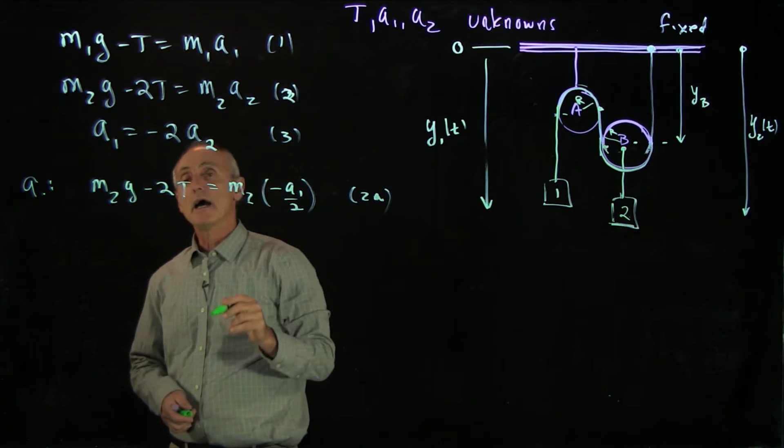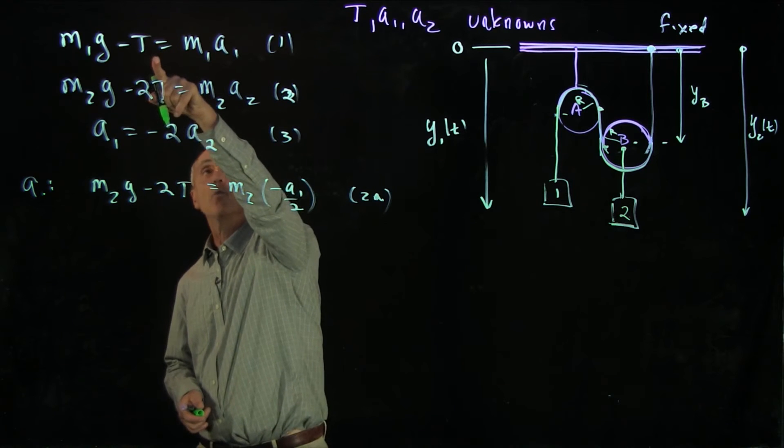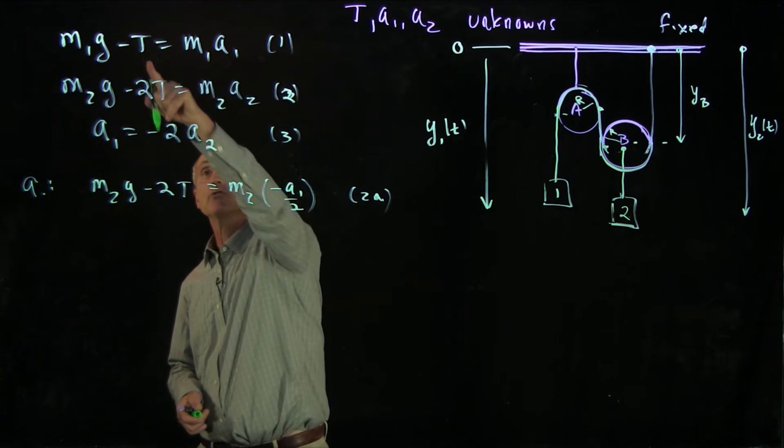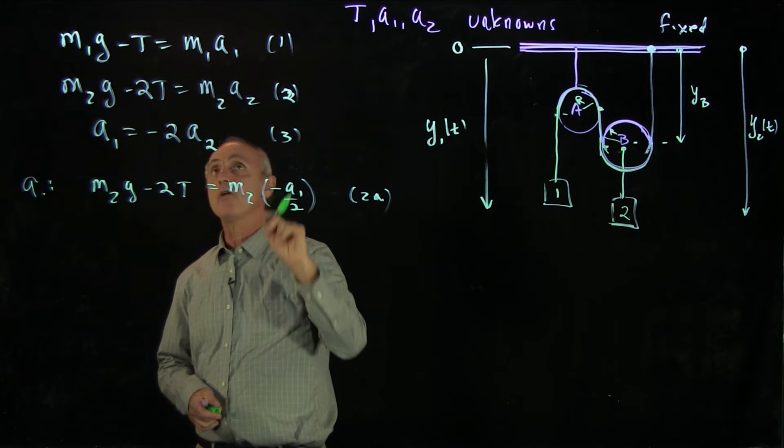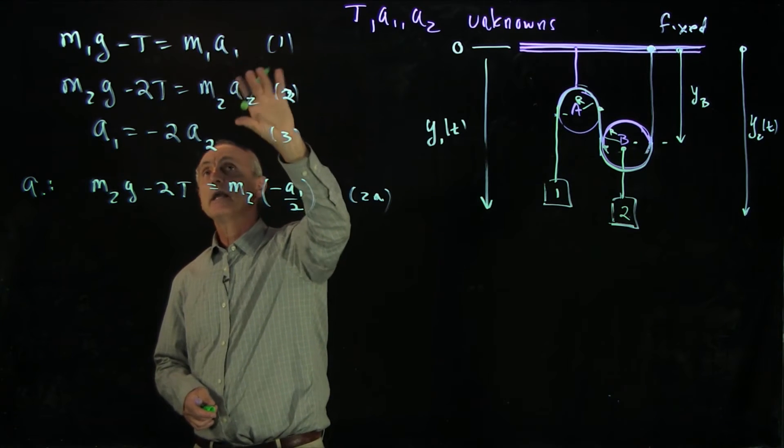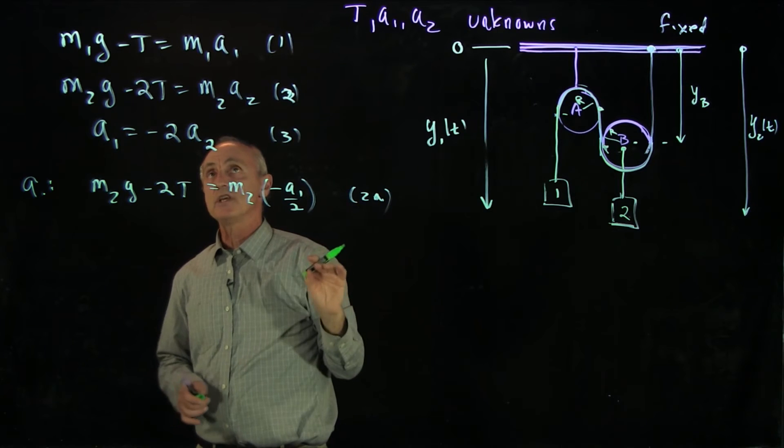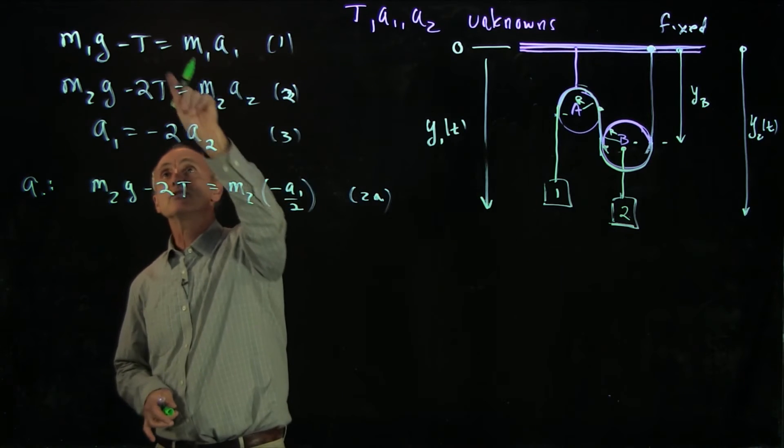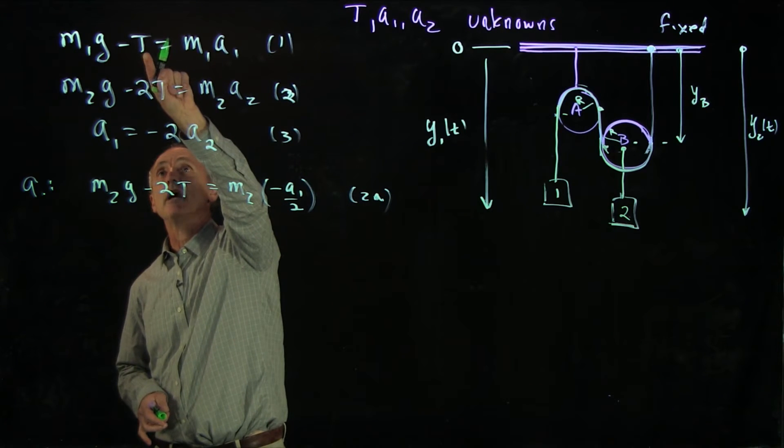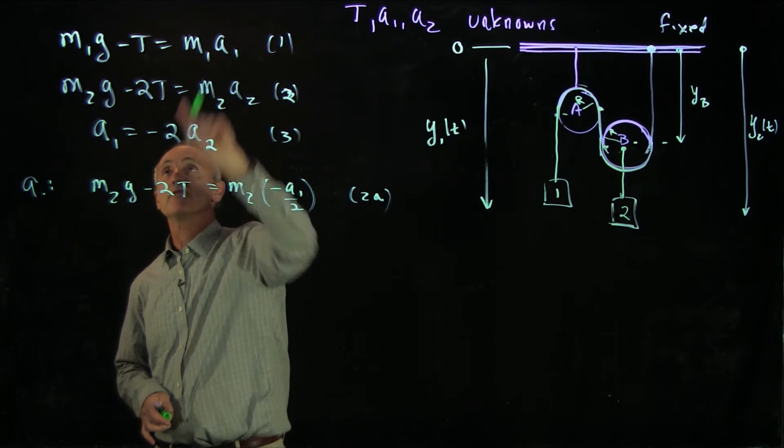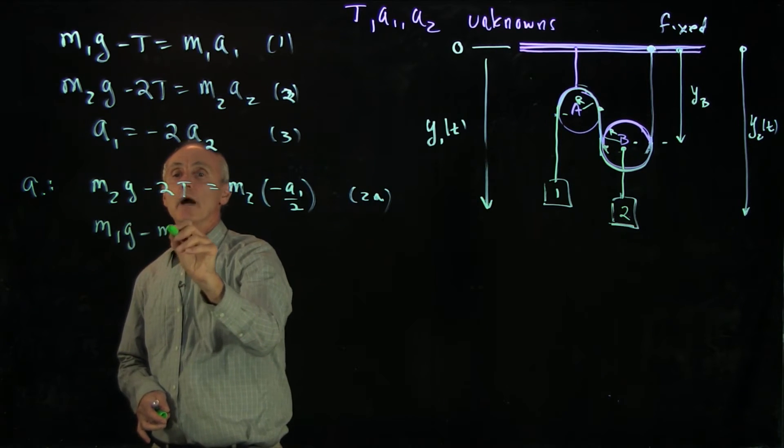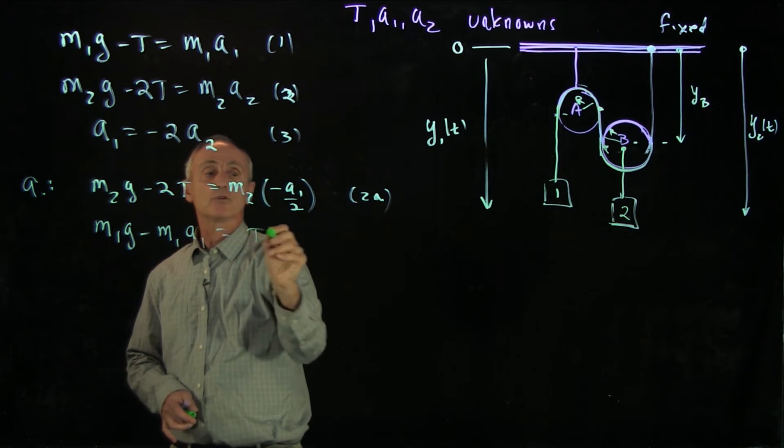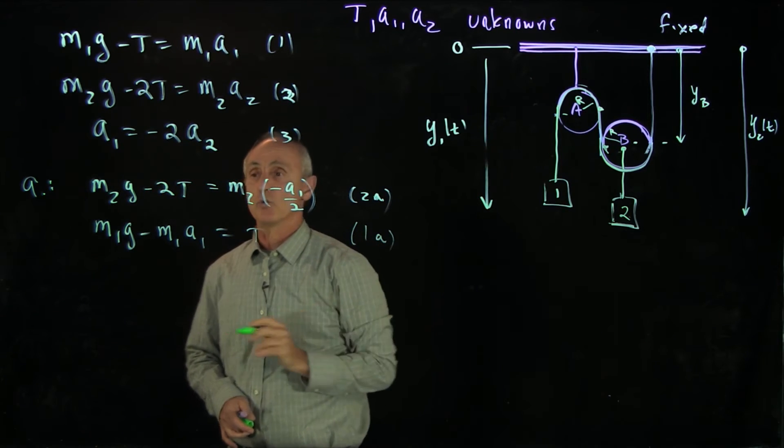And now I have equation 1 and equation 2a, two unknowns t and a1. And what I can do is I can solve for either equation, and I can make a choice what's easiest. When I look at these equations, it's easiest for me to identify what t is in terms of a1. So I'll write m1g minus m1a1 is equal to t. I'll call that equation 1a.